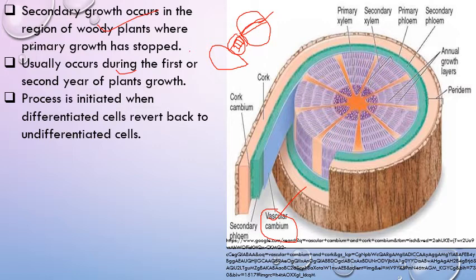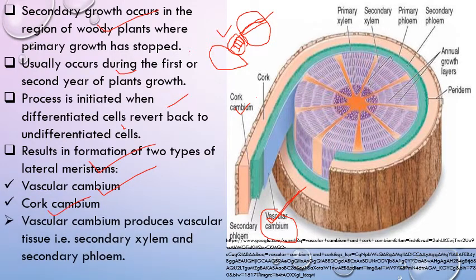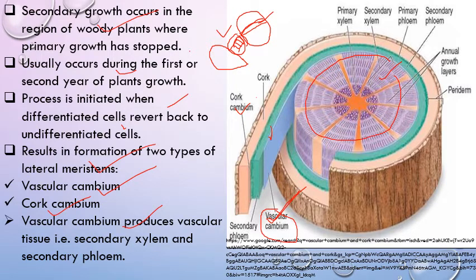This process is initiated when differentiated cells revert back to undifferentiated cells, resulting in formation of two lateral meristems: vascular cambium and cork cambium. Vascular cambium produces two types of vascular tissues — towards the inner side it produces secondary xylem (shown in bluish color) and towards the outer side it produces secondary phloem (shown in green).